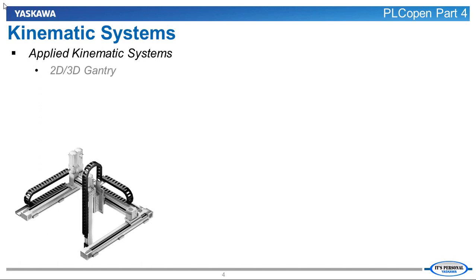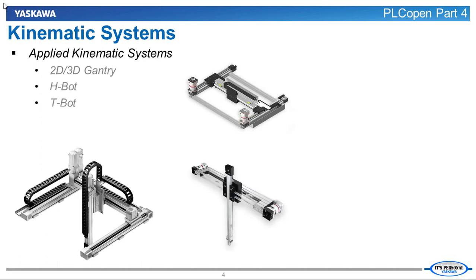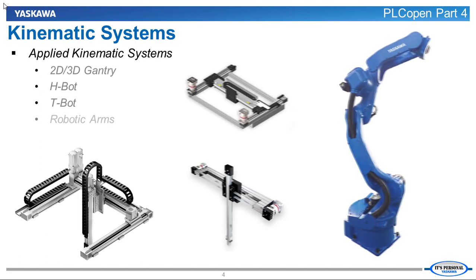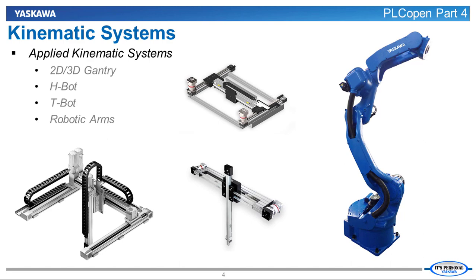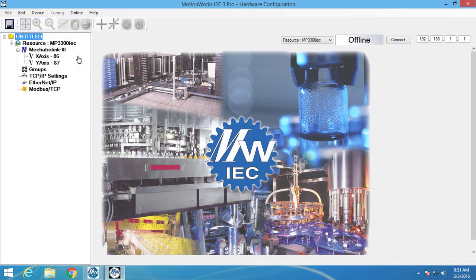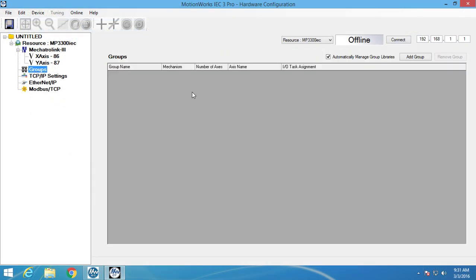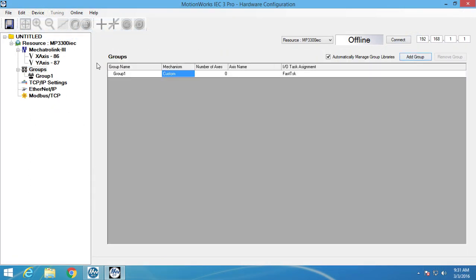There are 2D and 3D gantry systems, H-Bots, T-Bots, and robotic arms. MotionWorks IC 3.0 supports 2D and 3D gantry systems, and MotionWorks 3.2 supports the H-Bot, T-Bot, and the MotoMan MLX compatible robot arms. These systems are just groups of servo motors that move together to create motion in 2D or 3D space, and they are very easy to create using MotionWorks IC3 hardware configuration.